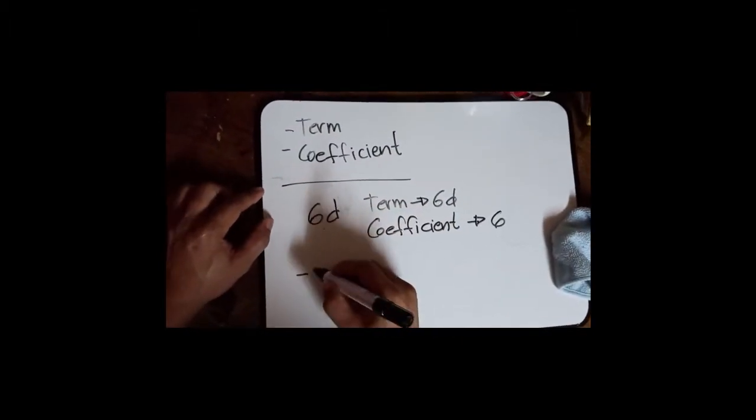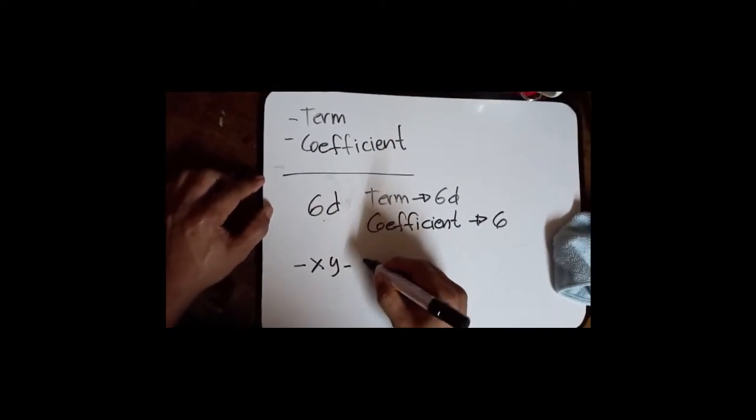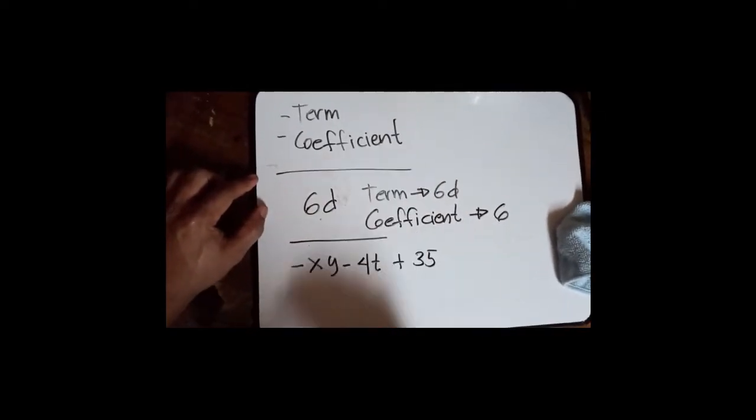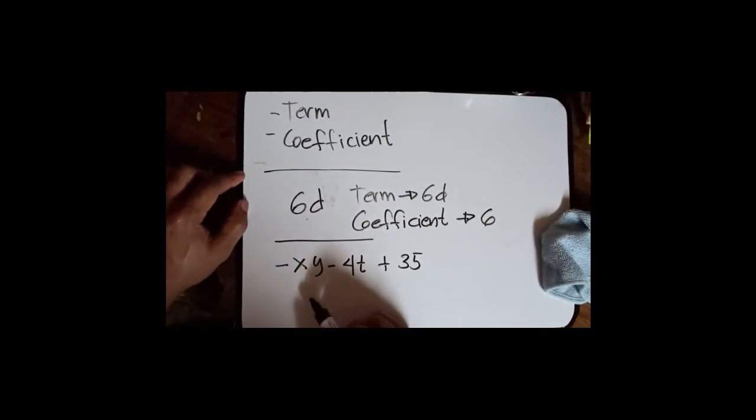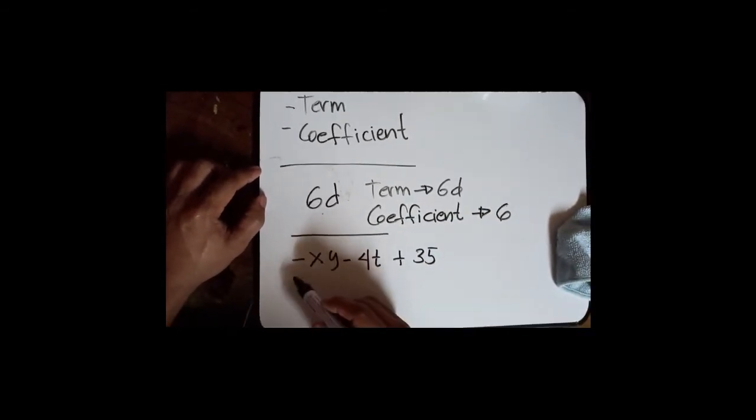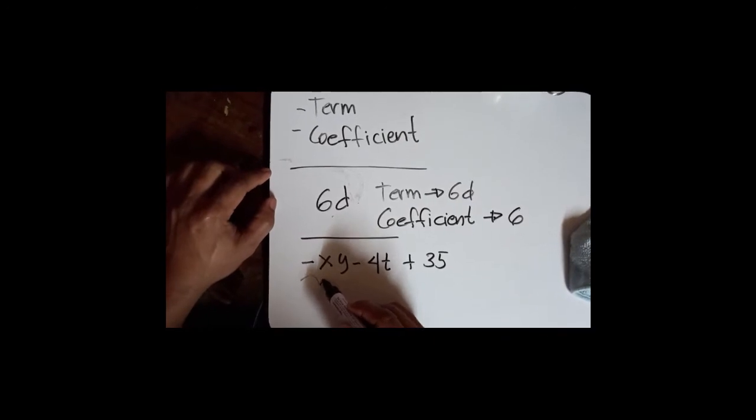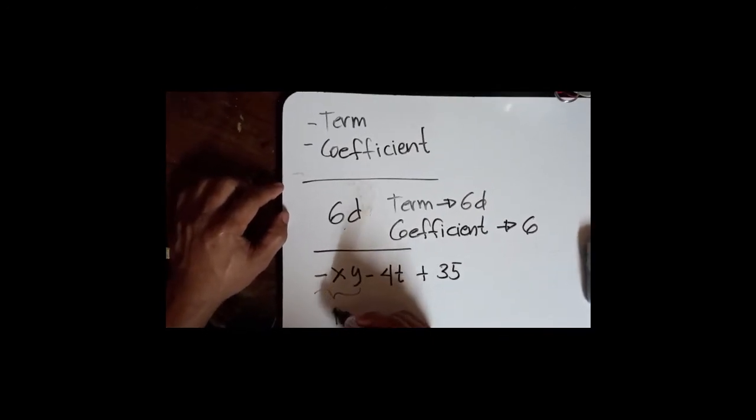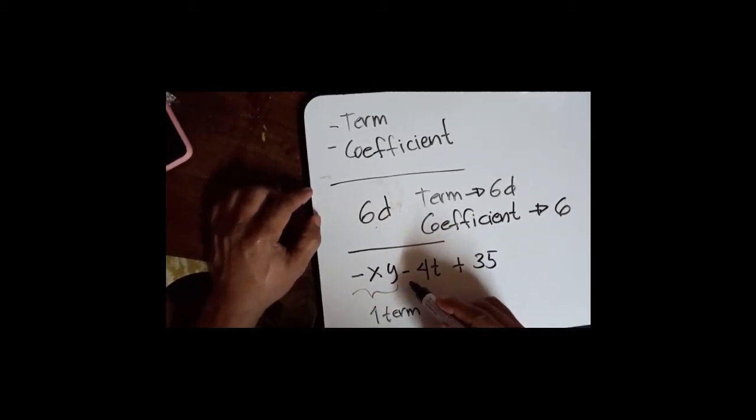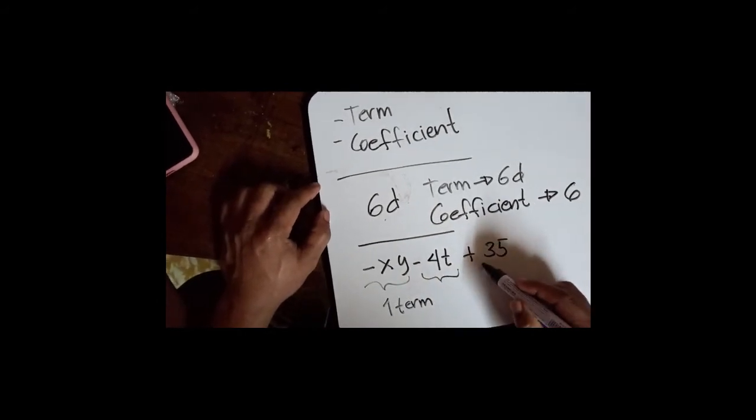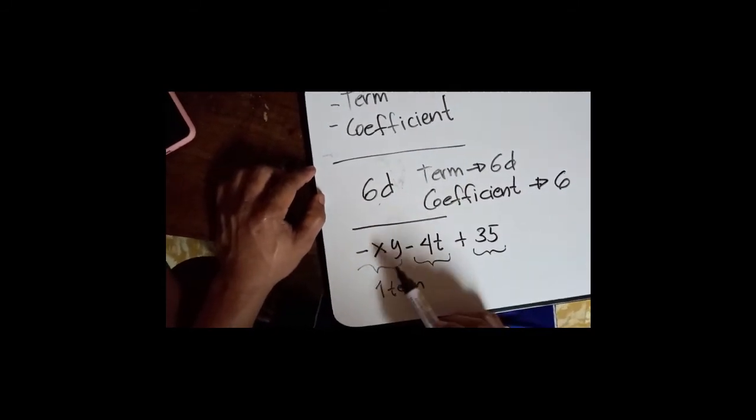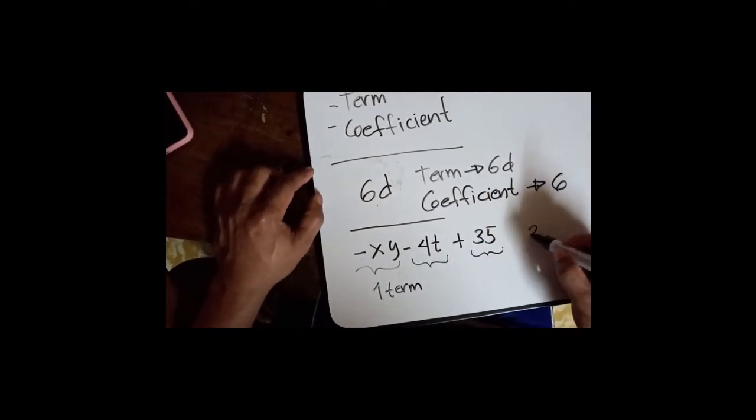Let's say negative xy minus 4d plus 35. Now how many terms do we have in this expression? So first we have one term here, then another term here, and another term here. So how many terms do we have? Let's count: one, two, three. So we have three terms.